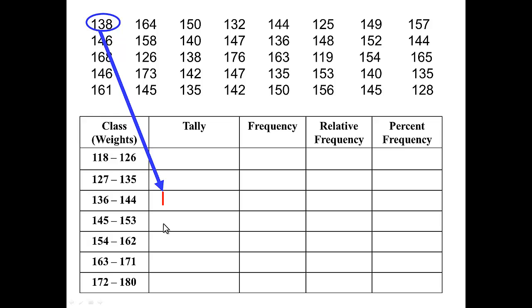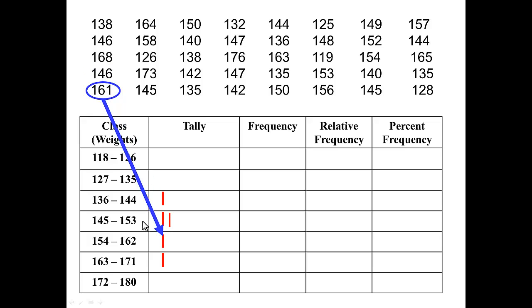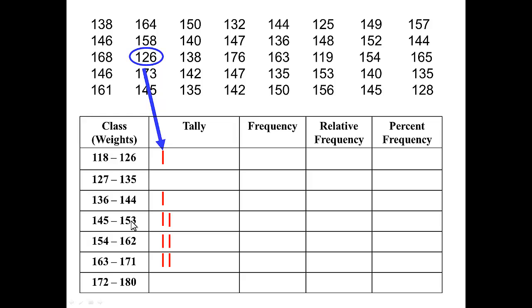The next number is 146 — it falls between 145 and 153, so we'll place the tally mark there. Then 168 falls between 163 and 171, 146 again falls into that same class, and 161 falls into its class. Notice that when I have a second tick mark I don't change it to a 2 — I just put another tally mark next to the first one and proceed through the data.